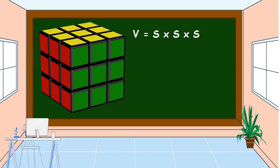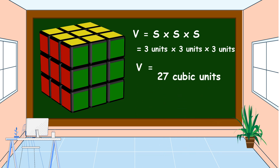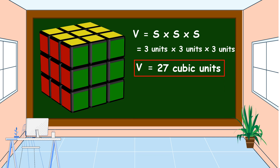To find the volume, we use the formula: volume is equal to side times side times side. So three units times three units times three units — therefore the volume of this cube is 27 cubic units. This is how we find the volume of a cube.